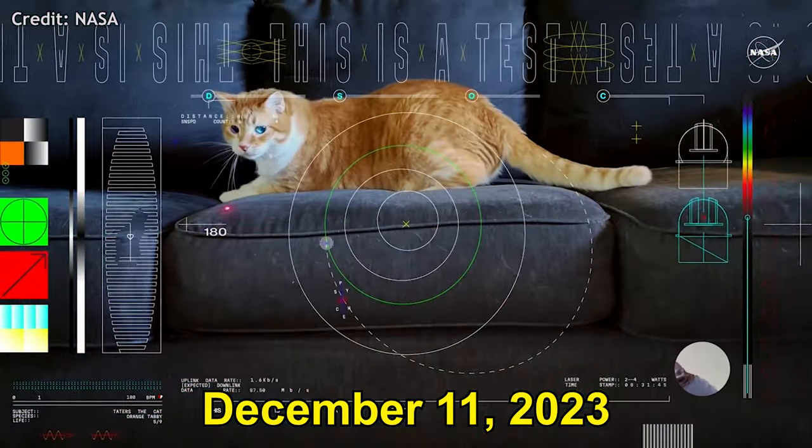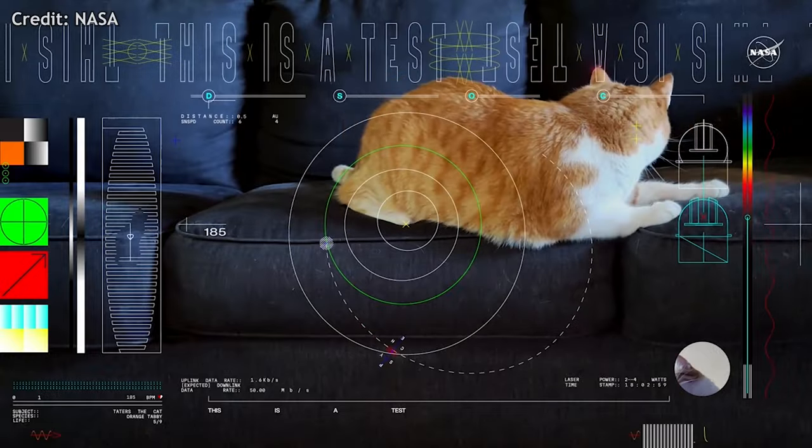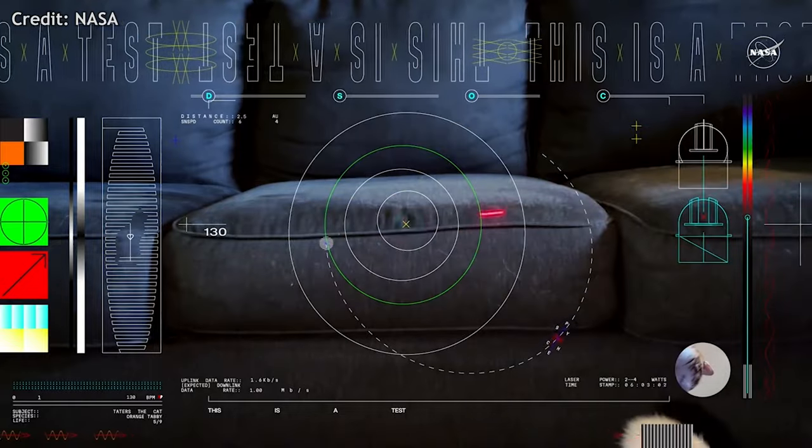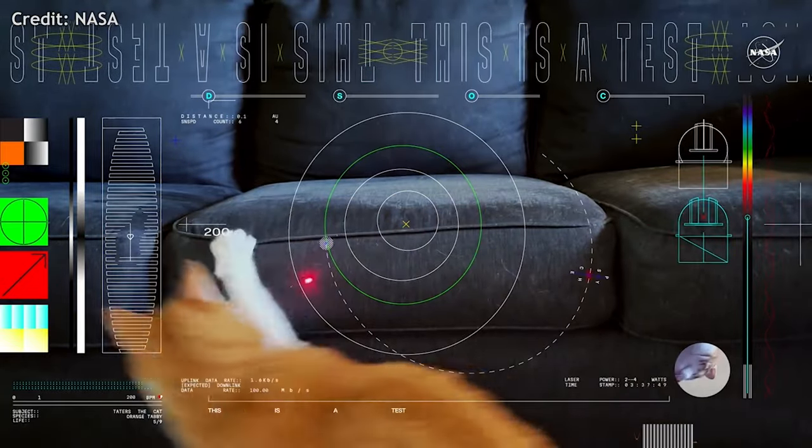On December 11, 2023, DSOC performed its first video transmission test, sending a 15-second clip of Taters the Cat at a bitrate of 267 megabits per second.